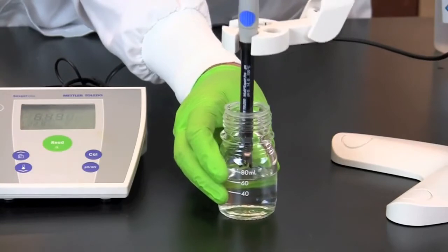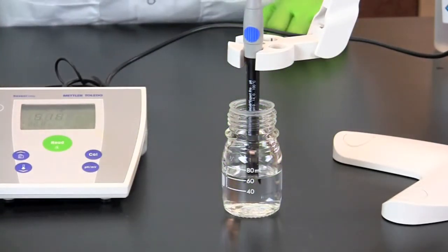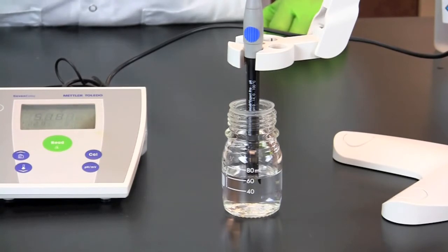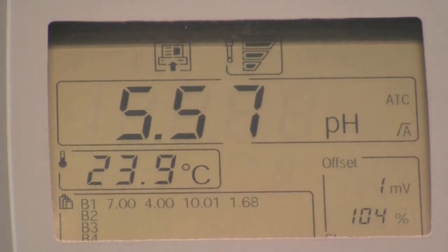Place the unknown solution beneath the electrode and slowly lower the arm so that the electrode is fully submerged in the solution. This sample has a pH of 5.57 at a temperature of 23.9 degrees Celsius.